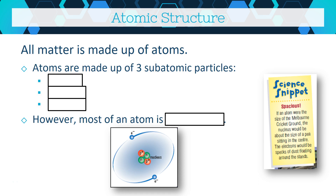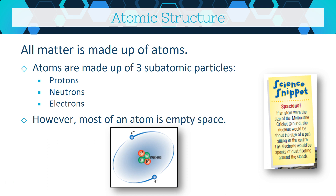All matter is made up of atoms. Atoms are made of three subatomic particles: protons, neutrons, and electrons. However, most of an atom is actually empty space. There's a cool science snippet about this — if an atom was the size of the Melbourne Cricket Ground, and you had a frozen pea in the center, that frozen pea could be your nucleus. The electrons are like specks of dust floating around in the stands, and in between those specks of dust and the frozen pea, basically nothing exists. It's a complete vacuum between the electrons and the nucleus.